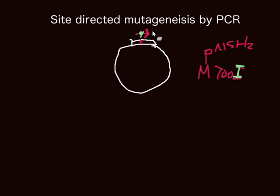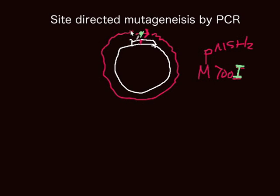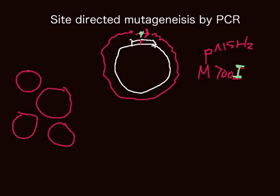Then we will do a single round PCR first. We are going to synthesize the plasmid DNA like this using a high-fidelity enzyme, and synthesize many times, doing PCR many times. Then we will have a lot of this single-strand plasmid DNA, and all this DNA is going to have a mutation there.